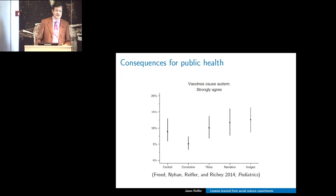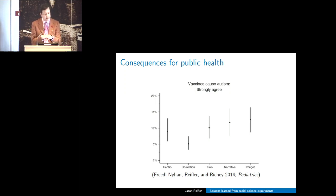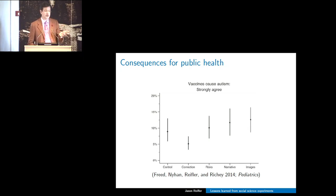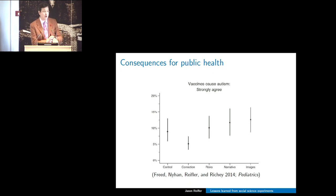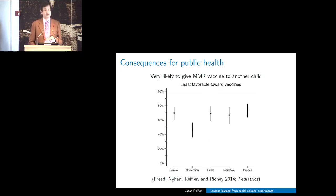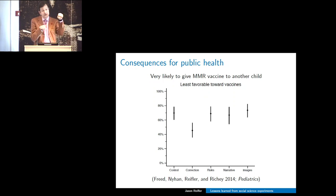What we found in this experiment was particularly interesting, and we're trying to find ways to follow up. Unlike our previous more directly political work, people who received the correction condition actually changed in the direction we wanted—their belief that MMR causes autism decreased. But it turns out to be more complicated: among the group least favorable toward vaccines, it also decreased the reported likelihood of vaccinating future children. So we have this interesting disconnect between more abstract attitudes about vaccines and behavioral intentions—something we need to come back to and follow up on.